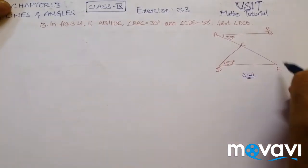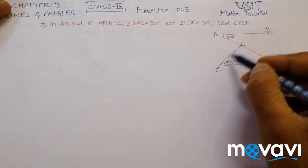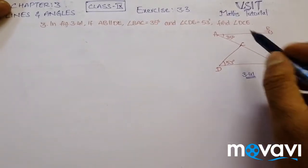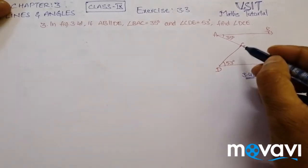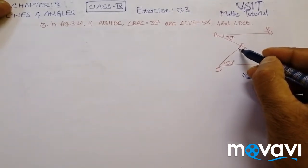BAC is equal to 35 degrees and CDE, angle CDE is 53 degrees. We have to find DCE, that is DCE, this angle. We have to find this angle.